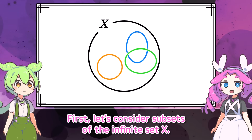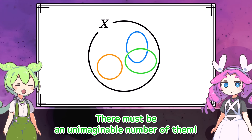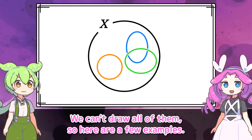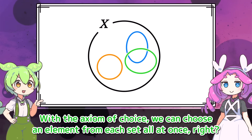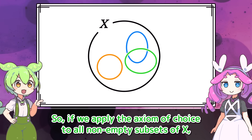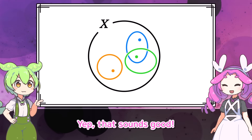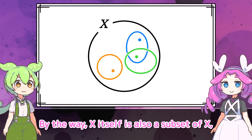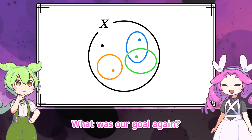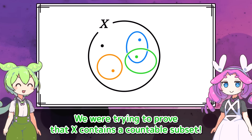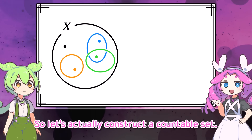First, let's consider subsets of the infinite set X. Assume each subset is non-empty. Subsets of an infinite set — there must be an unimaginable number of them. That's true, we can't show all of them, so here are a few examples. With the axiom of choice, we can choose an element from each set all at once. So if we apply the axiom of choice to all non-empty subsets of X, we can choose one element from each subset all at once. Note that X itself is also a subset of X, so we've also chosen an element from X itself. We were trying to prove that X contains a countable subset — a countable set is an infinite set that can be indexed by natural numbers. So let's actually construct a countable set.